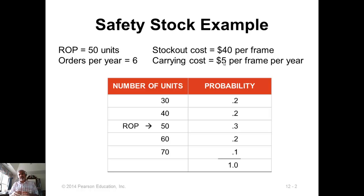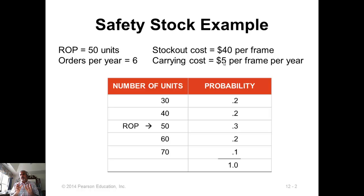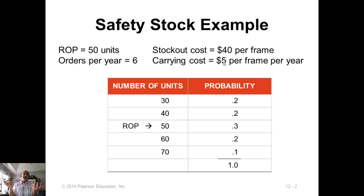Stockout cost is a function of two things. One is the immediate lost profit — the profit you would have made on the sale you couldn't fulfill. The second part is harder to estimate: when there are many stockouts, customers get frustrated and leave, never to come back. You have to estimate the future lost profit from those departing customers — for example, maybe 20% of customers will never return, so you add 20% of the profit margin to get your total stockout cost.